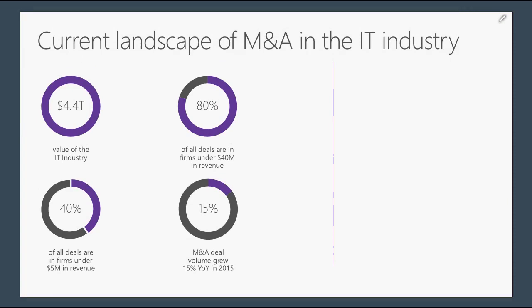It is a great time to buy. We want to give you a little background on the current landscape in the IT industry. We are in a $4.4 trillion industry. When you look at deals that get done, 80% of all deals are in firms under $40 million in revenue. An interesting stat is that 40% of all deals are done in firms under $5 million in revenue — a tremendous number of deals done in smaller firms. M&A growth has been running at 15% year over year and has continued between 10% and 15% since then.